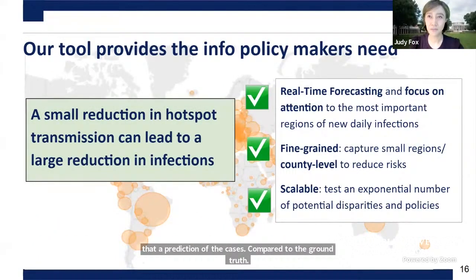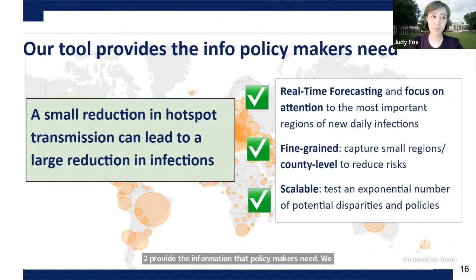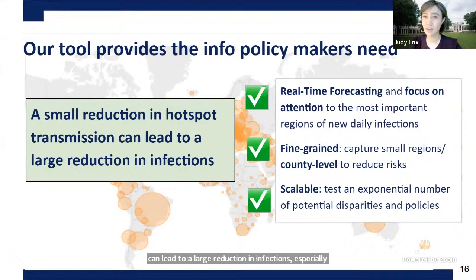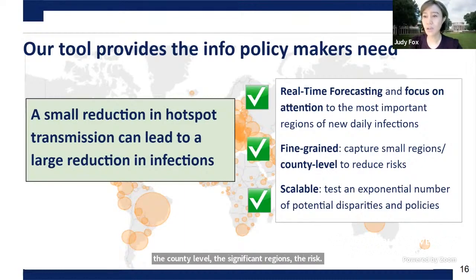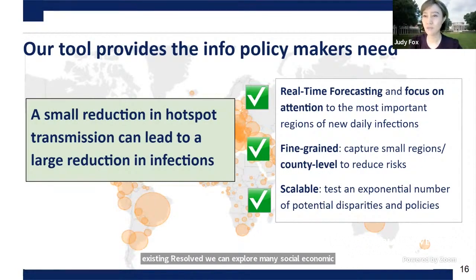These results provide information that policymakers need. We believe a small reduction in hotspot transmission can lead to a large reduction in infections, especially in the early stage. Real-time forecasting and focusing attention on the most important regions in daily infection is crucial. Our fine-grained method captures infection at the county level, which would significantly reduce risk. There is much future work to explore, including the many socioeconomic impacts and disparities that can be studied with these existing results.